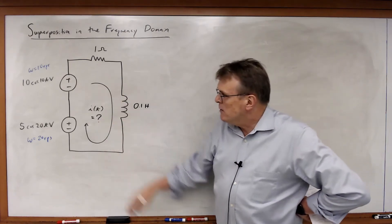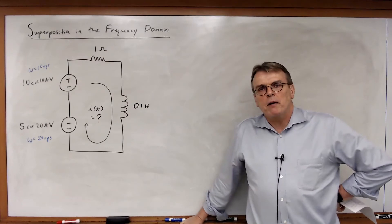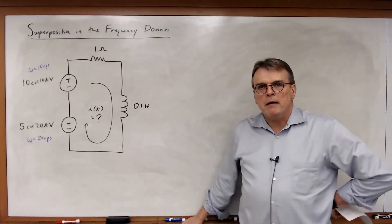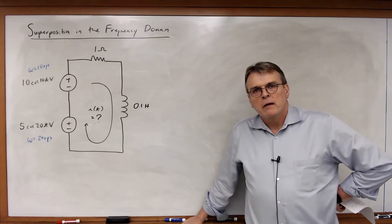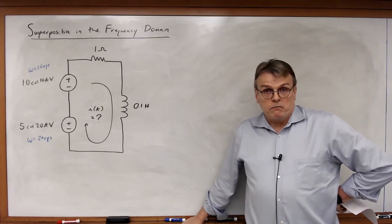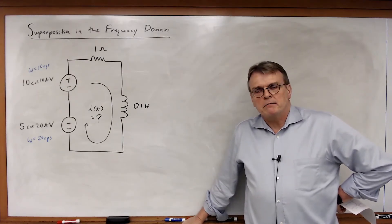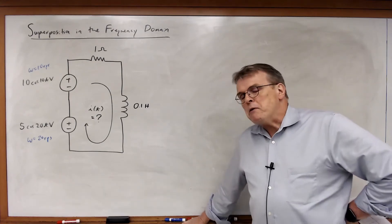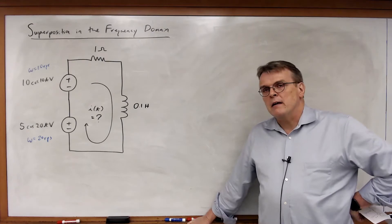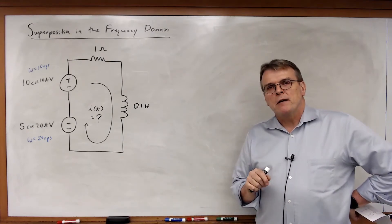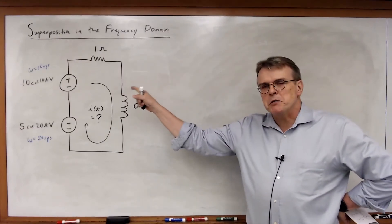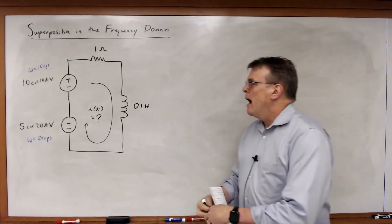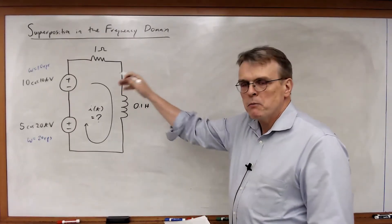So I clearly cannot apply phasor analysis — which value of omega do I pick? I can't pick them both. You might say we'll have to do this in the time domain, and you could; that would be the hard way. Another approach is to ask: what about superposition? Let's try applying superposition to this problem and see if it gives us a way to solve it. I'm going to split this into two separate problems.